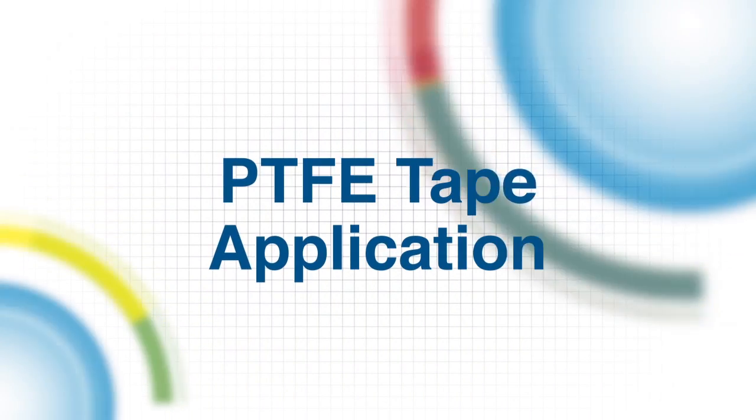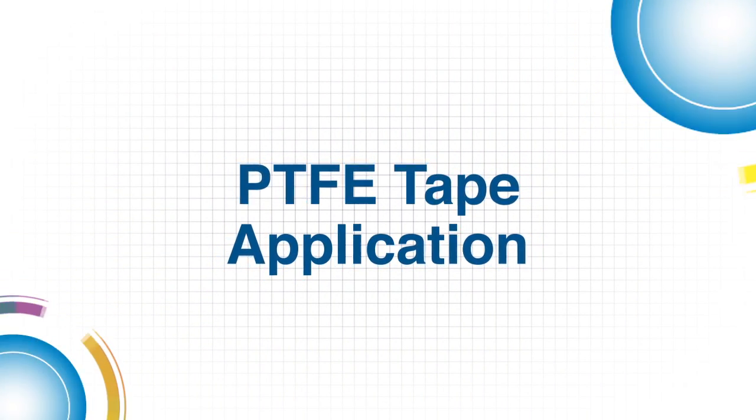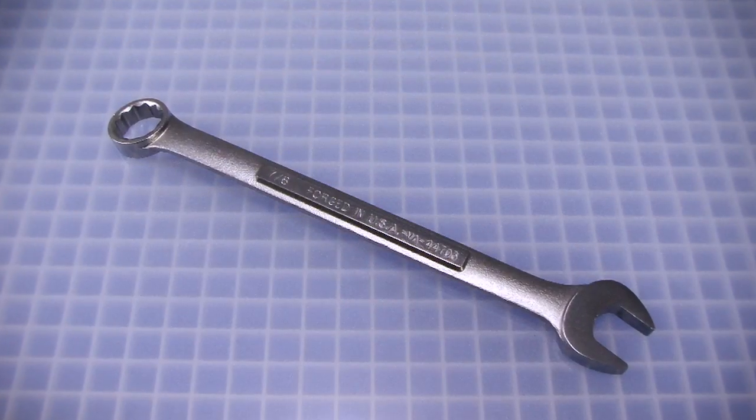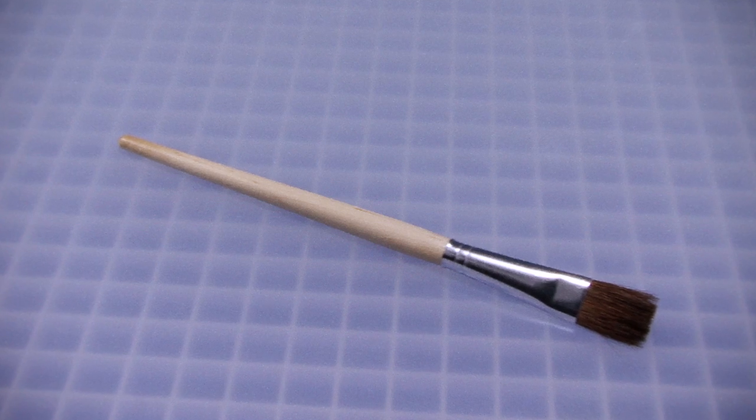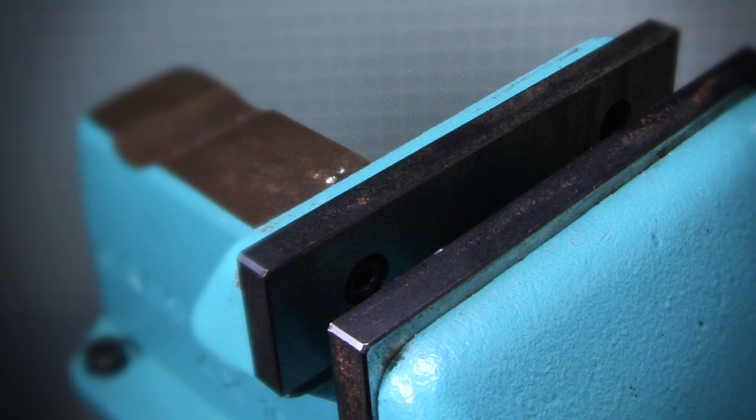Welcome to this Swagelok how-to video. Here's what you'll need to perform the procedure shown in this brief video: an open end wrench, a dry soft bristled brush, a roll of PTFE tape, and a vise which is optional.